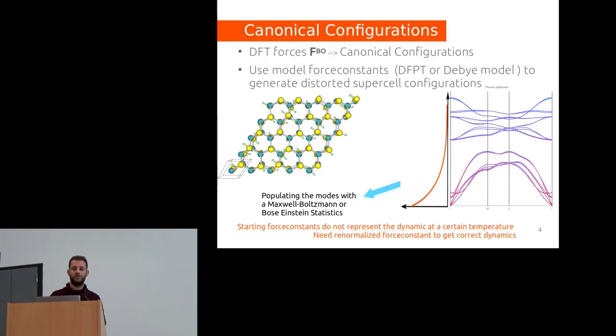The other way implemented in Hellman's code is to do configurations. You take phonons, usually from DFT or empirical models, and populate the modes with a Maxwell-Boltzmann or Bose-Einstein distribution. This gives supercells where the atoms are distorted. When you do the DFT calculation of those configurations, it gives you forces that you will input into TDEP, which will be your training set to fit the second-order and third-order force constants.